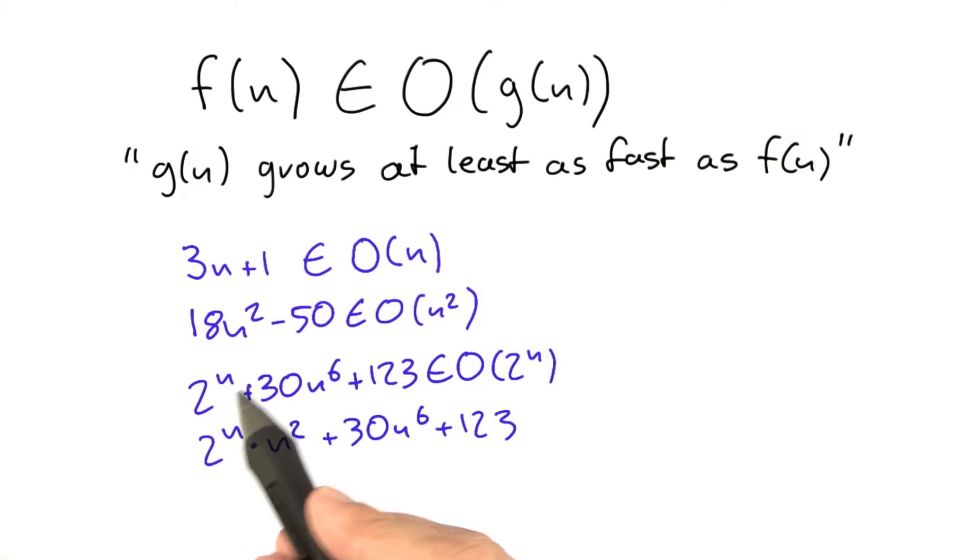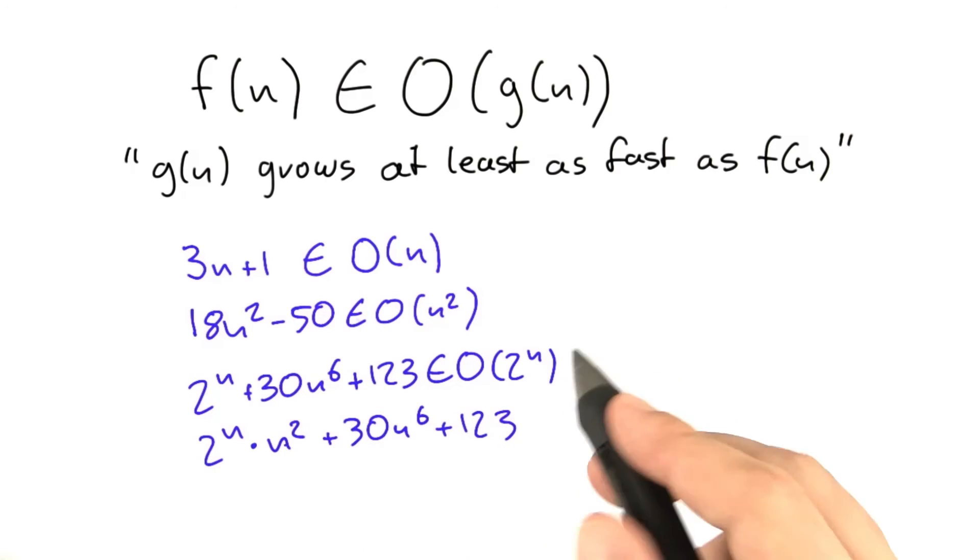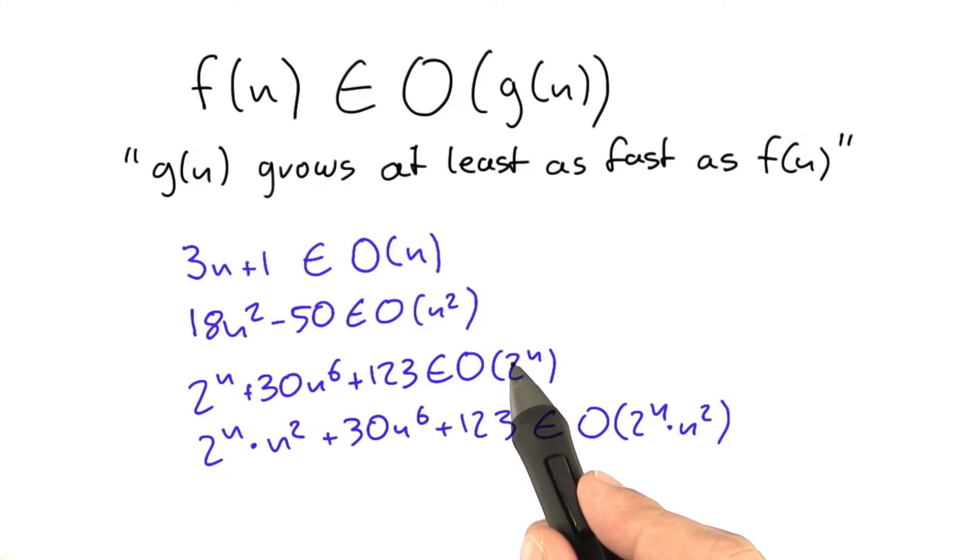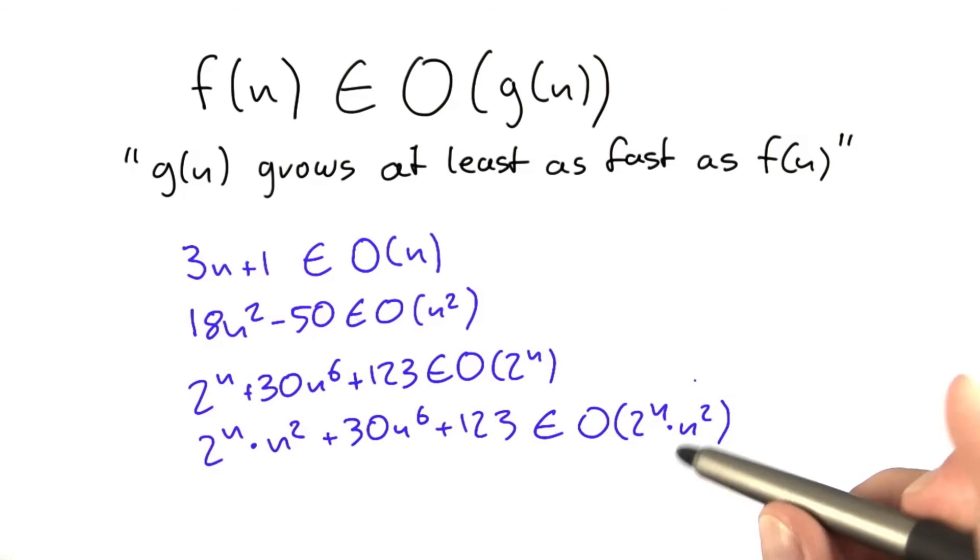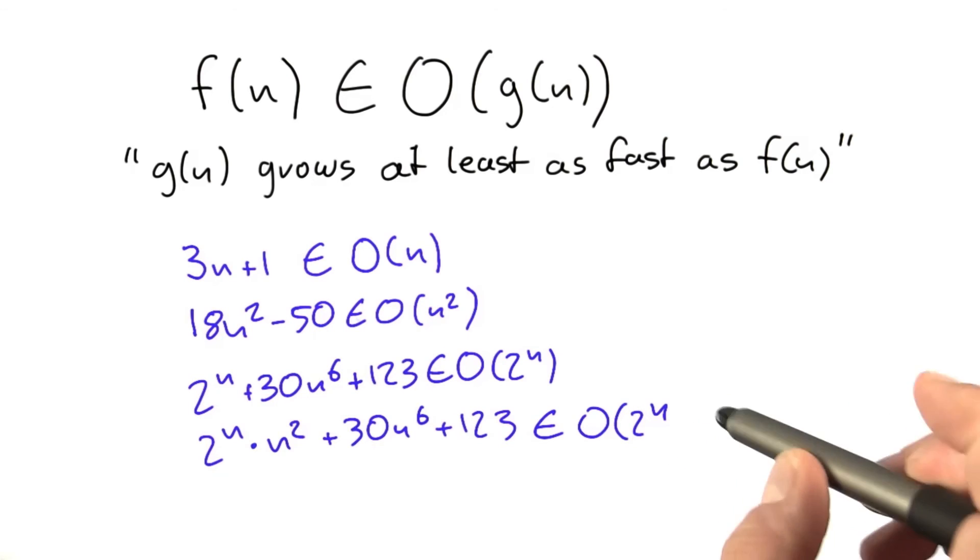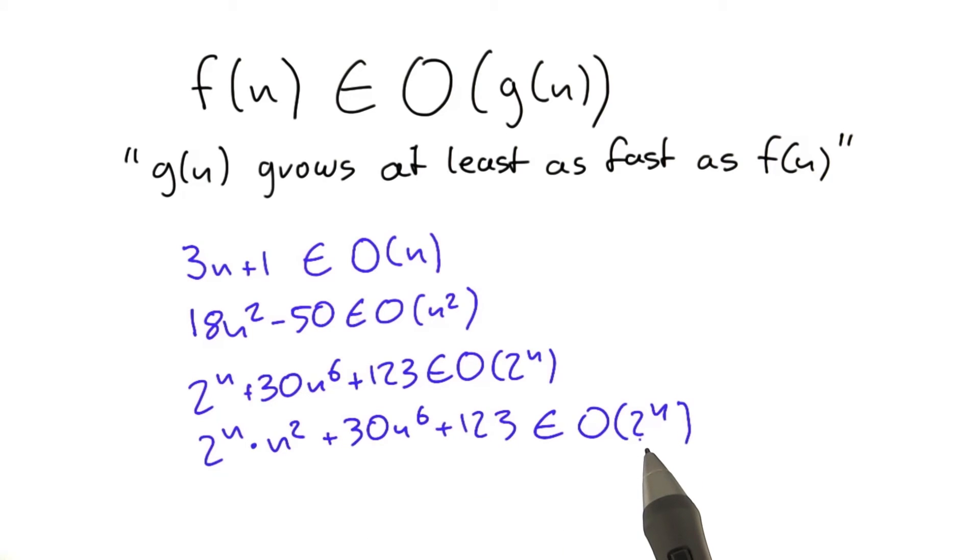Now if we don't add those two parts here, but for example we have, we multiply 2 to the power of n times n squared, we need to include that into the O notation. Because just having 2 to the power of n, that grows slower than 2 to the power of n times n squared. So if we just had 2 to the power of n here, that statement would not be true because 2 to the power of n grows slower than 2 to the power of n times n squared.